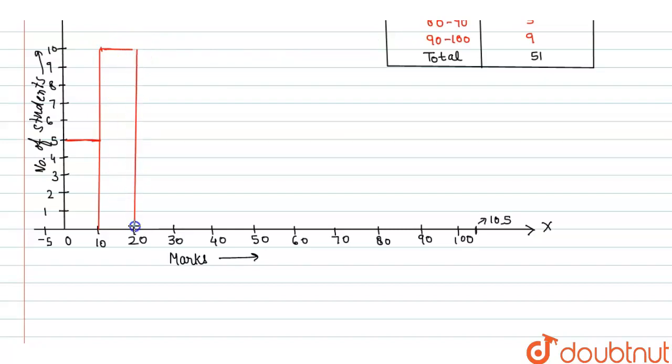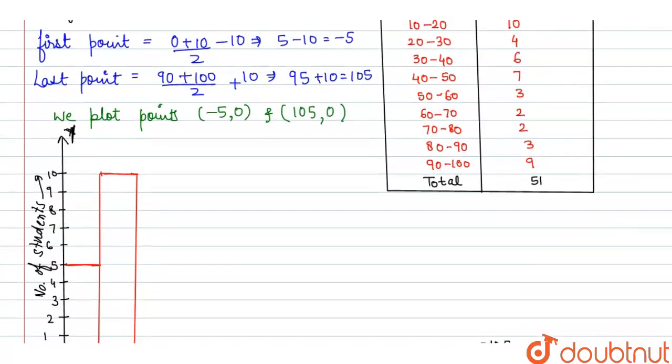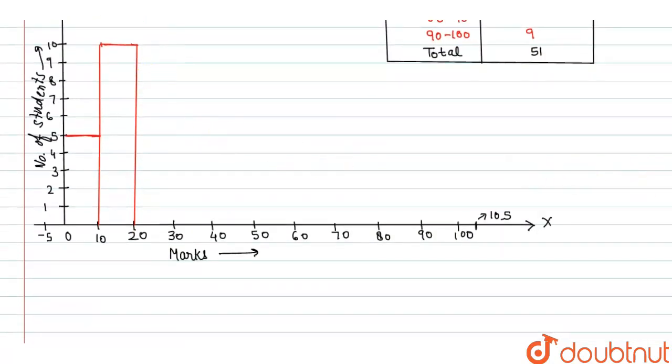Next, now we have to take 3rd part. 3rd part is 20 to 30 up to 4, so 20 to 30 up to 4 means only here. Next was 6, 30 to 40 up to 6 means this one.